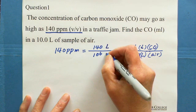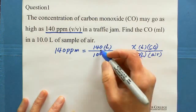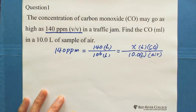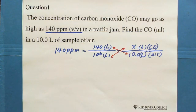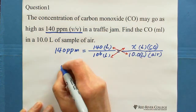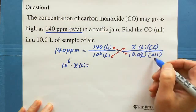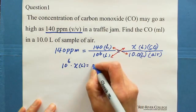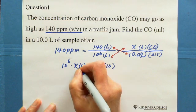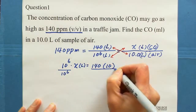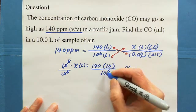So we choose liters. This is X liters. All liters. To solve this, we use cross multiplication: X times 10 to the 6 equals 140 multiplied by 10. So this is 140 multiplied by 10 liters.